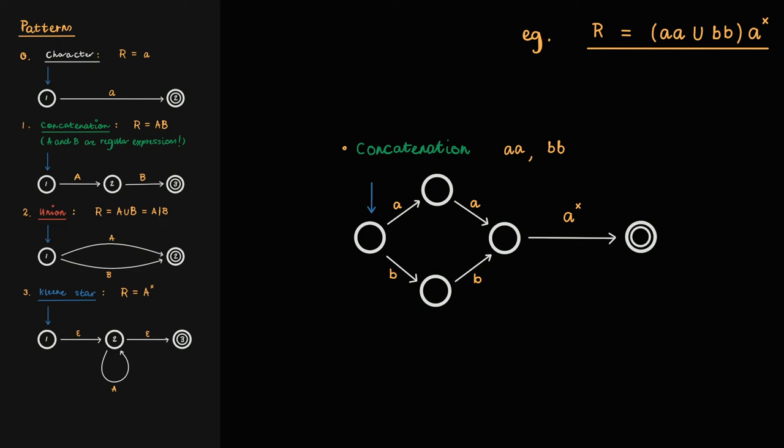As you can see, only one reducible regular expression remains, a*. Let's replace its transition in the NFA with the Kleene star pattern, symbolizing the empty transitions with the epsilon character.